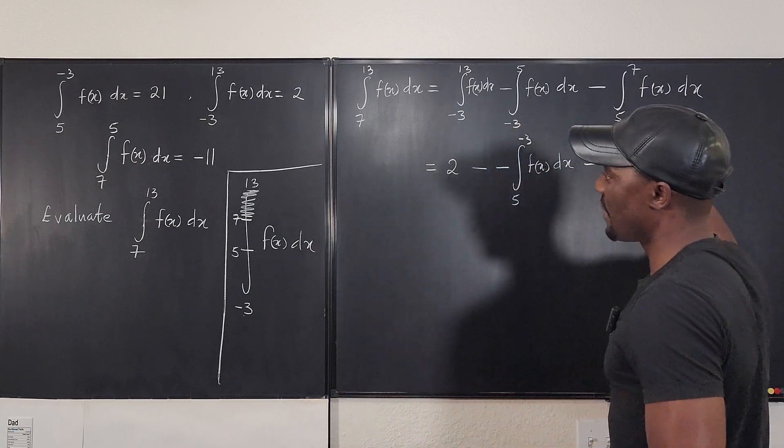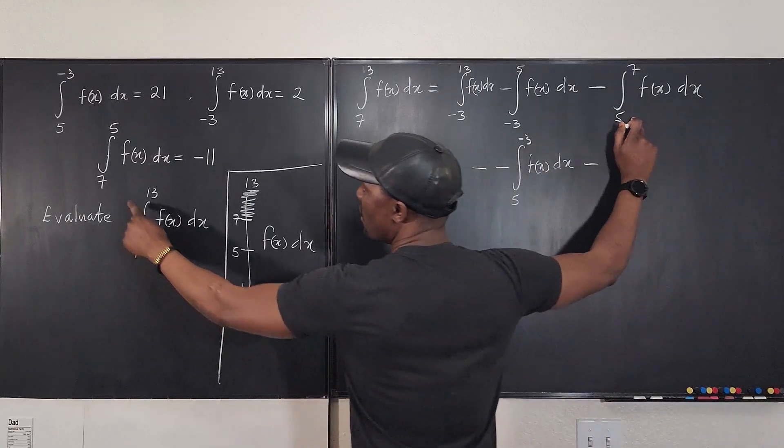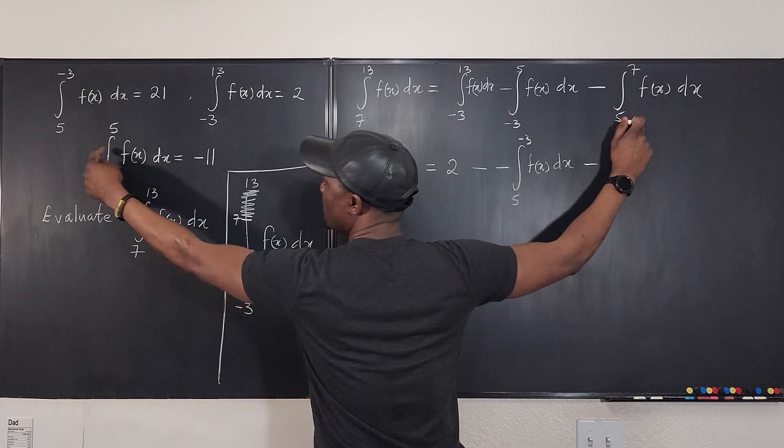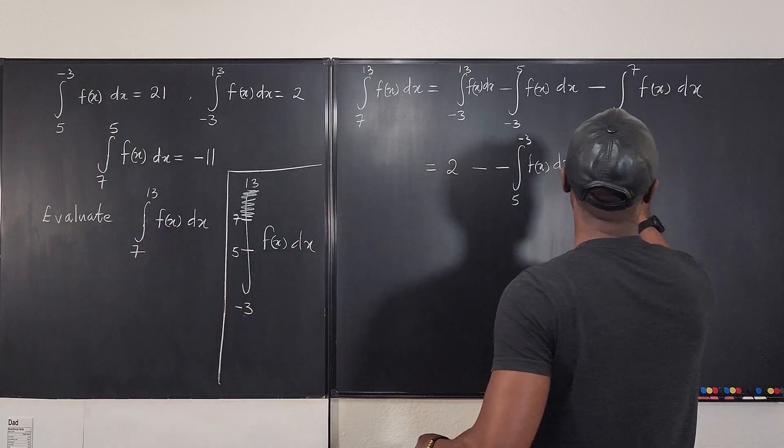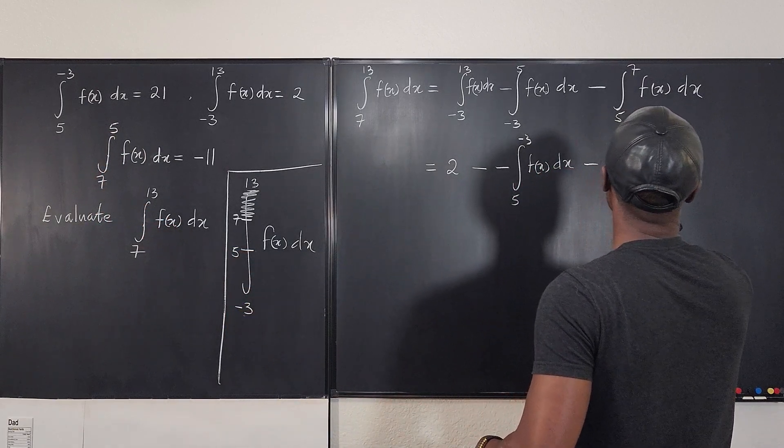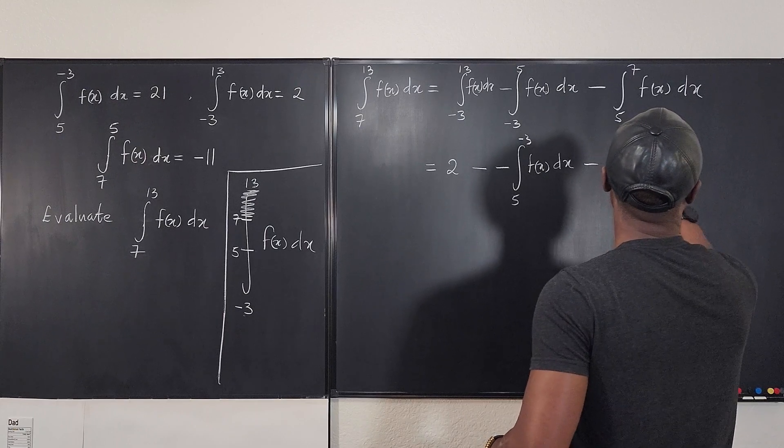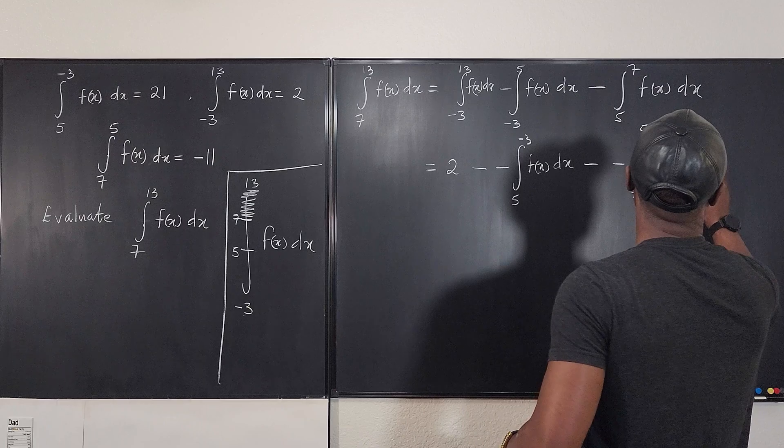Minus. Do I have from 5 to 7? No. I have from 7 to 5. So it's going to be the negative of this when I flip it. So it's going to be minus again minus the integral from 7 to 5 of f(x) dx.